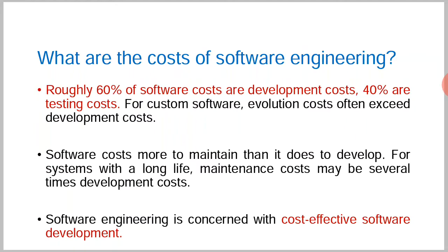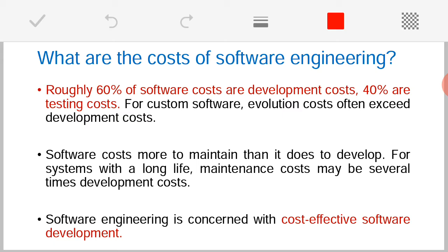So how much money do we need to spend across all these different activities? Normally, we say that roughly around 60 percent of software costs are development costs and 40 percent are for testing. Always remember, the cost of the software always depends on the type of the software. There are many critical factors like dependability, security, safety, and reliability — based on all these things, the software cost may vary.